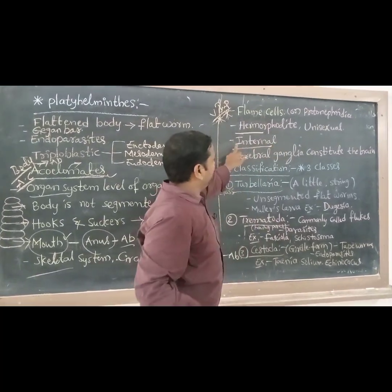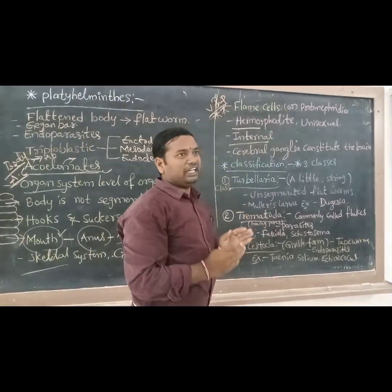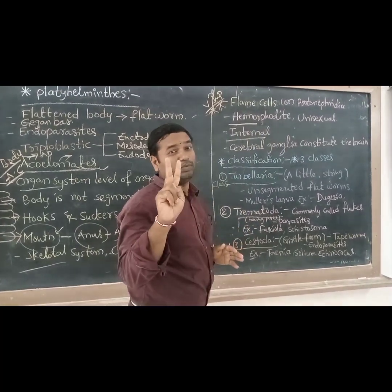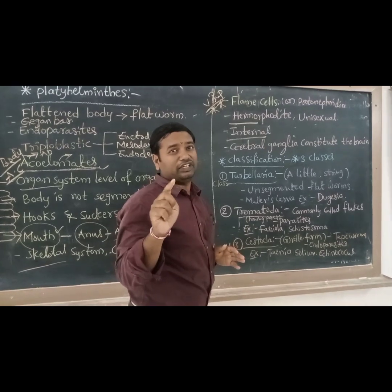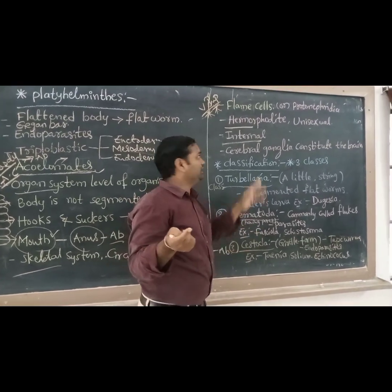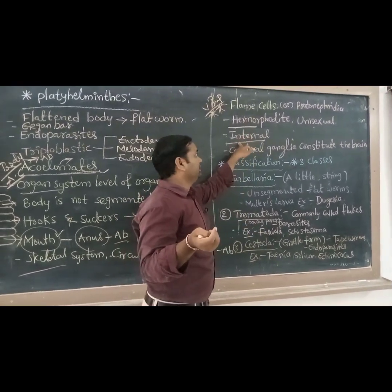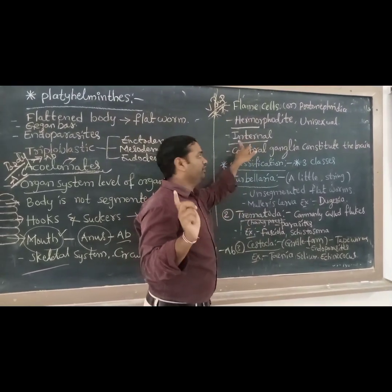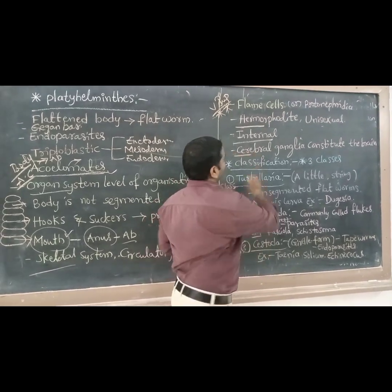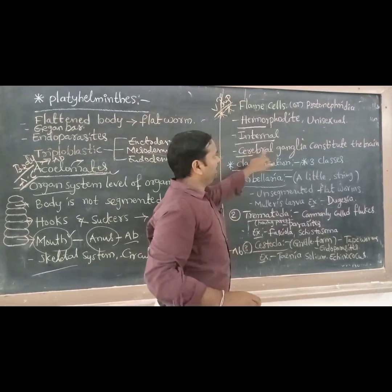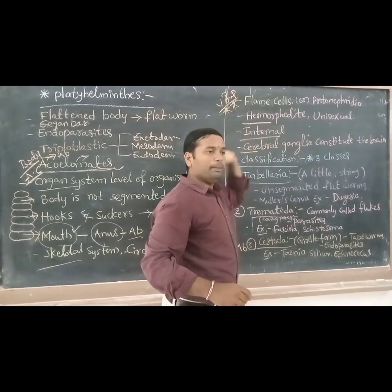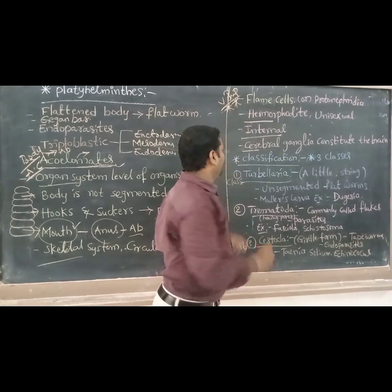Fertilization is internal. Fertilization has two types: external fertilization and internal fertilization. This group has internal fertilization. Regarding the nervous system, cerebral ganglia constitute and form the brain.